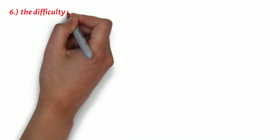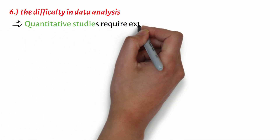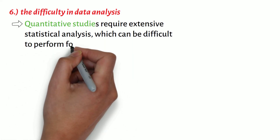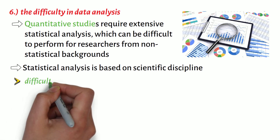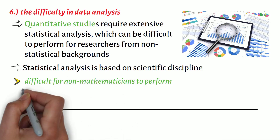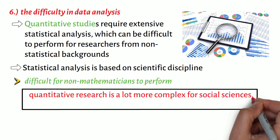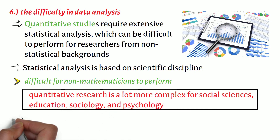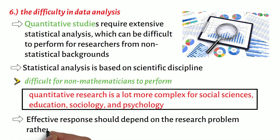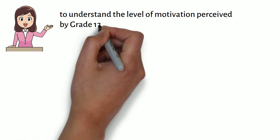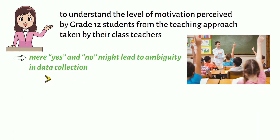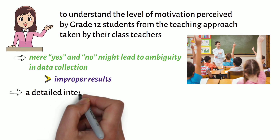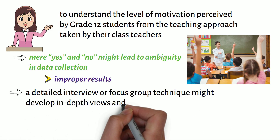And sixth is the difficulty in data analysis. Quantitative studies require extensive statistical analysis, which can be difficult to perform for researchers from non-statistical backgrounds. Statistical analysis is based on scientific discipline and hence difficult for non-mathematicians to perform. Also, quantitative research is a lot more complex for social sciences, education, sociology and psychology. Effective responses should depend on the research problem rather than just a simple yes or no response. For example, to understand the level of motivation perceived by grade 12 students from the teaching approach taken by their class teachers, mere yes and no might lead to ambiguity in data collection and hence improper results. Instead, a detailed interview or focus group technique might develop in-depth views and perspectives of both the teachers and children.